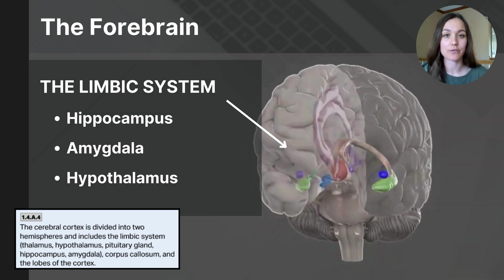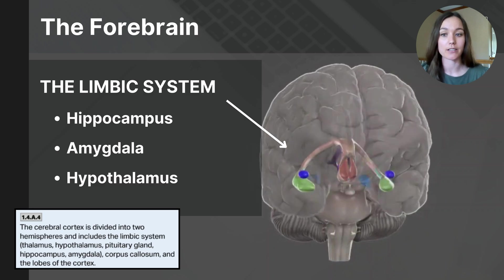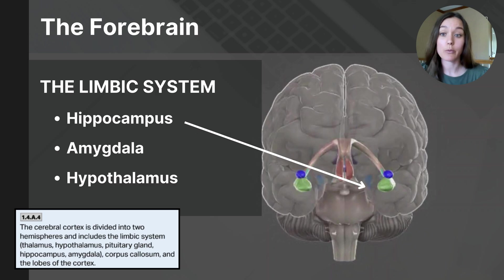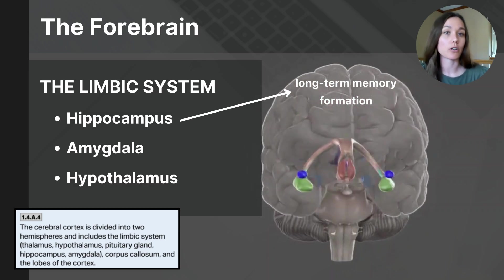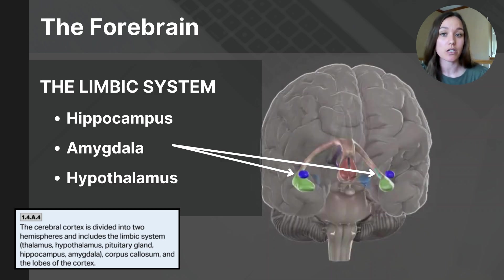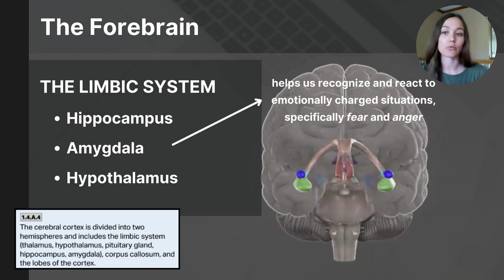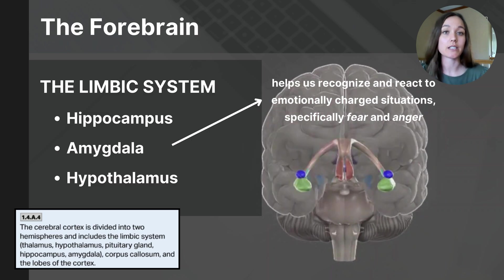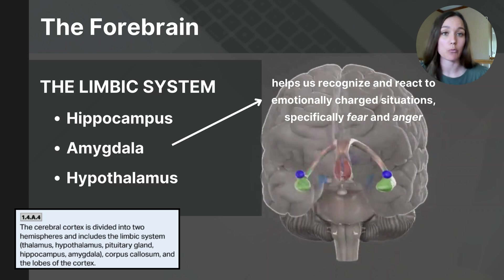The limbic system is a complex set of structures located deep within the brain. It encircles the top of the brain stem and includes the hippocampus, amygdala, and hypothalamus, creating a ring-like curved formation. On screen there are two green arm-like structures — these are the hippocampus, responsible for memory formation, specifically consolidating long-term memories, making it essential for learning and retention. Next are two blue almond-shaped structures at the ends of the hippocampus — these are the amygdala, which processes basic primitive emotions like fear, aggression, and pleasure. The amygdala helps us recognize and react to emotionally charged situations and also influences formation of emotionally significant memories important for survival.